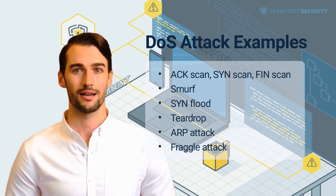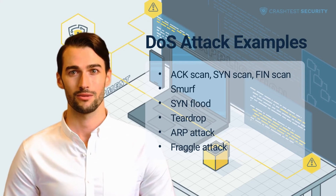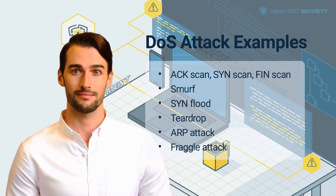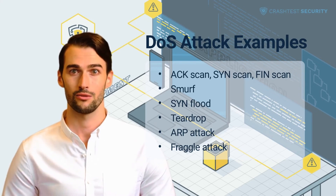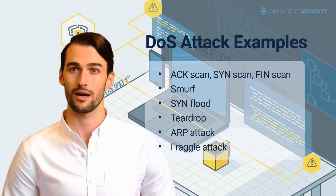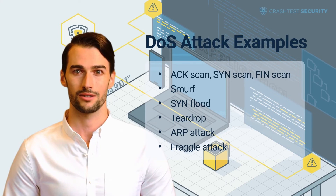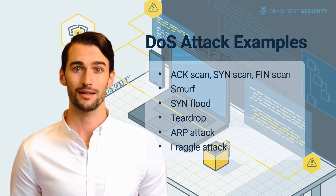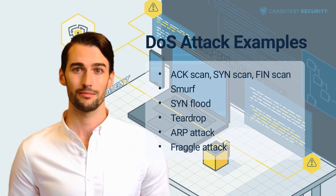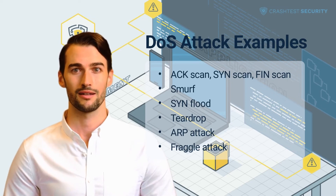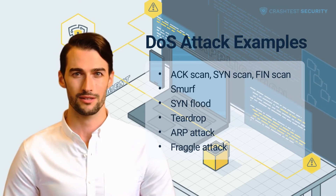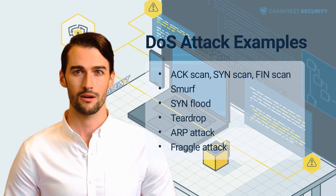The ARP attack, also known as an ARP spoofing attack, involves sending address resolution protocol messages over a network to link the attacker's MAC address to the IP address of its target. When this is executed successfully, the traffic intended to lead to the target is instead received by the attacker, which leads to a denial of service. This type of attack can only be performed on local area networks that use ARP.